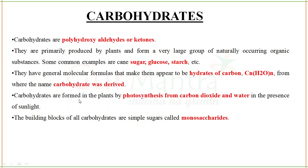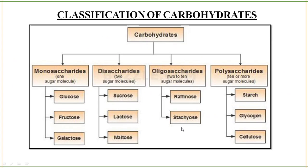Carbohydrates are formed in plants by photosynthesis from carbon dioxide and water in the presence of sunlight. The building blocks of all carbohydrates are simple sugars called monosaccharides — single units that are the simplest sugars.